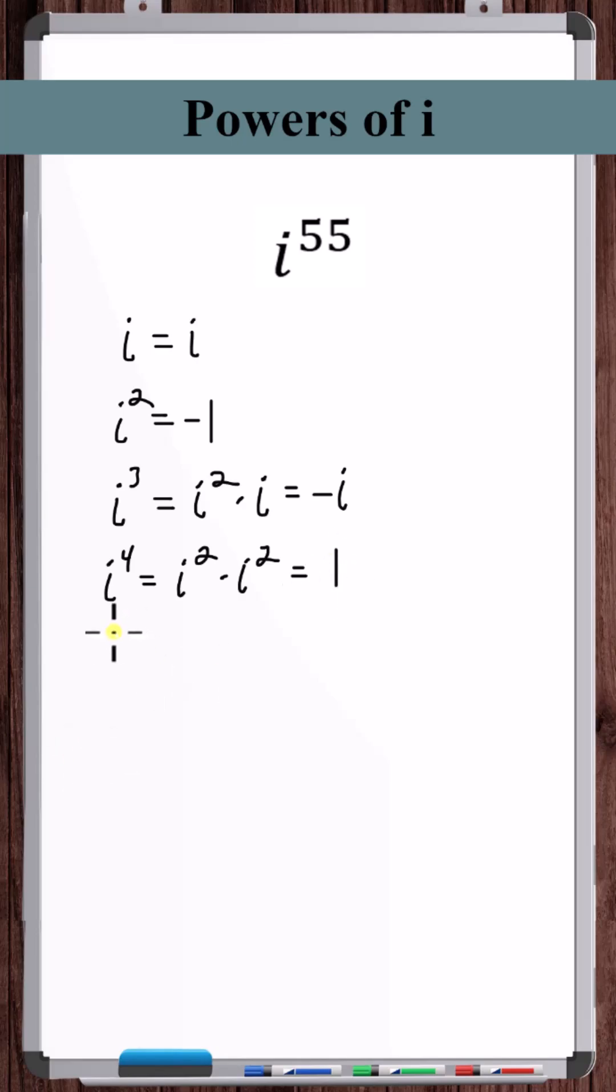We take advantage of the fact that this pattern repeats over and over again. Therefore, any power of i that is divisible by 4 is going to equal 1.